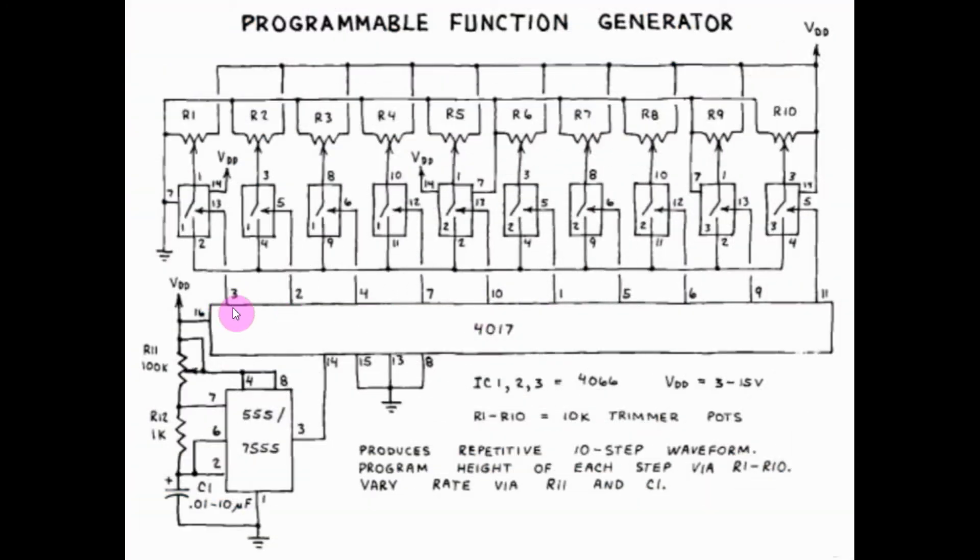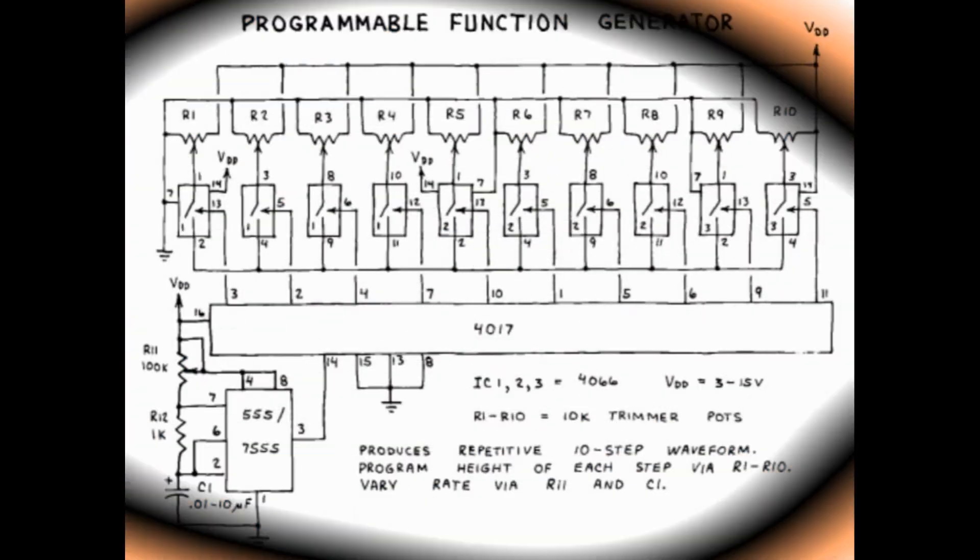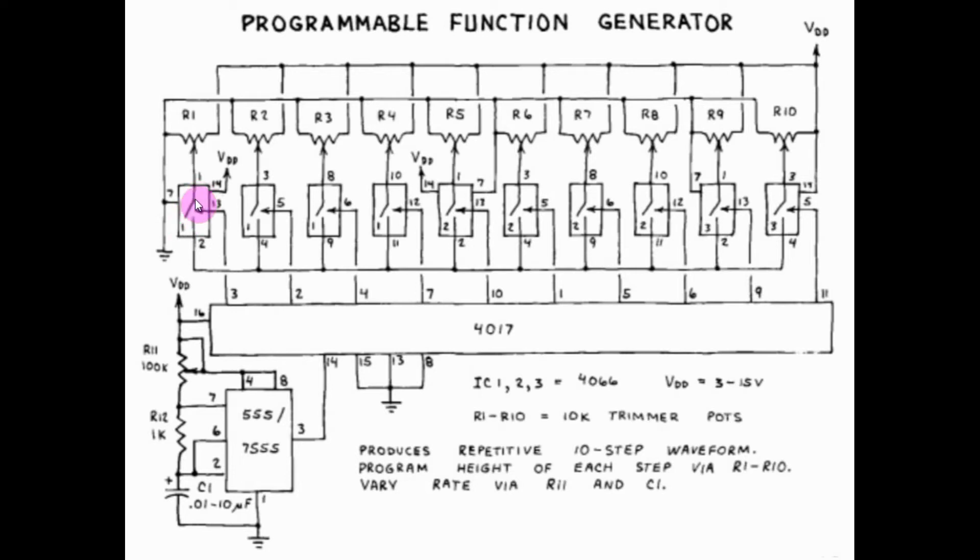Each output from the decade counter is used as control signal of these 10 electronic switches inside three 4066 ICs. One side of each switch is connected to a 10K pot.